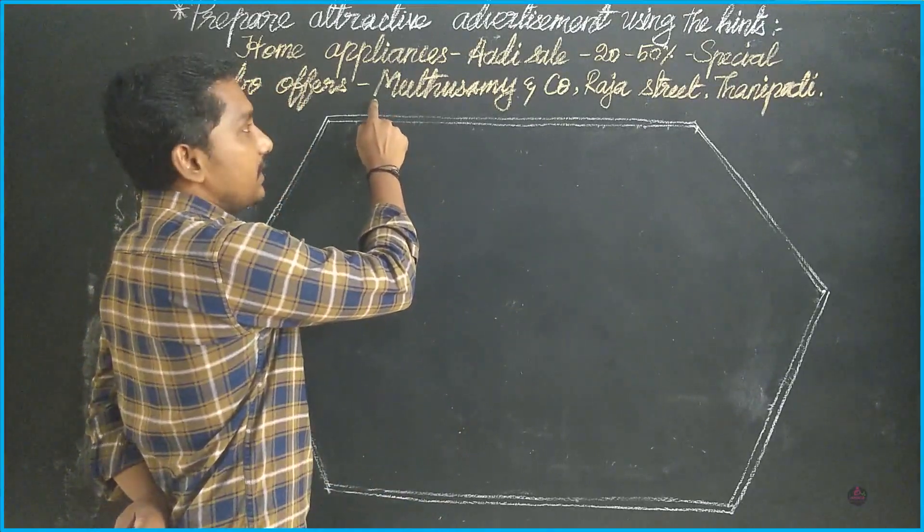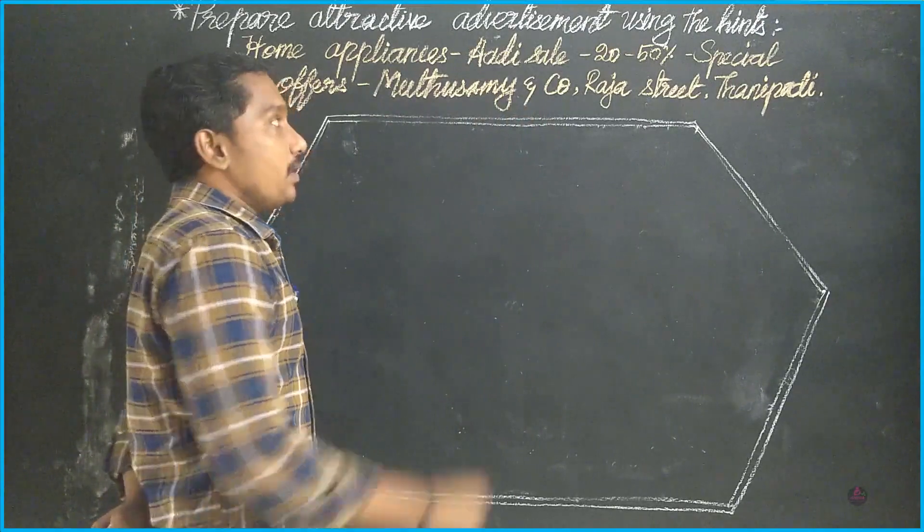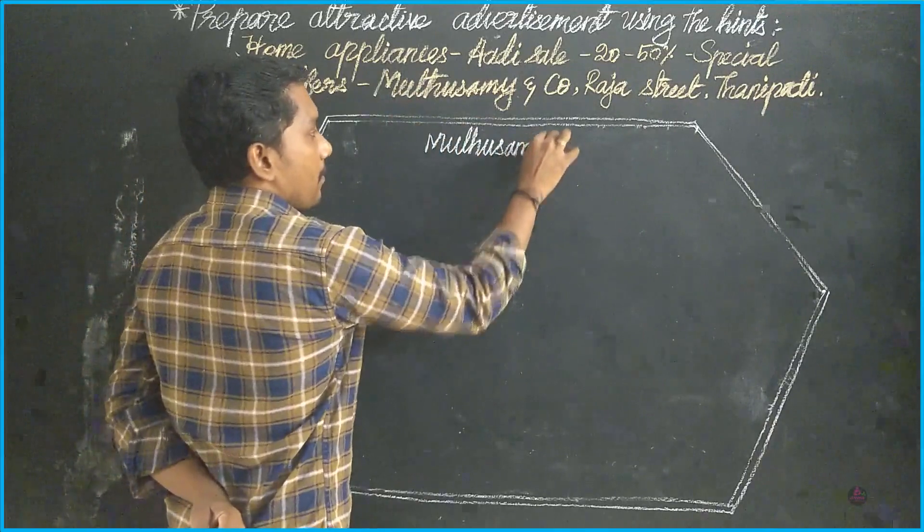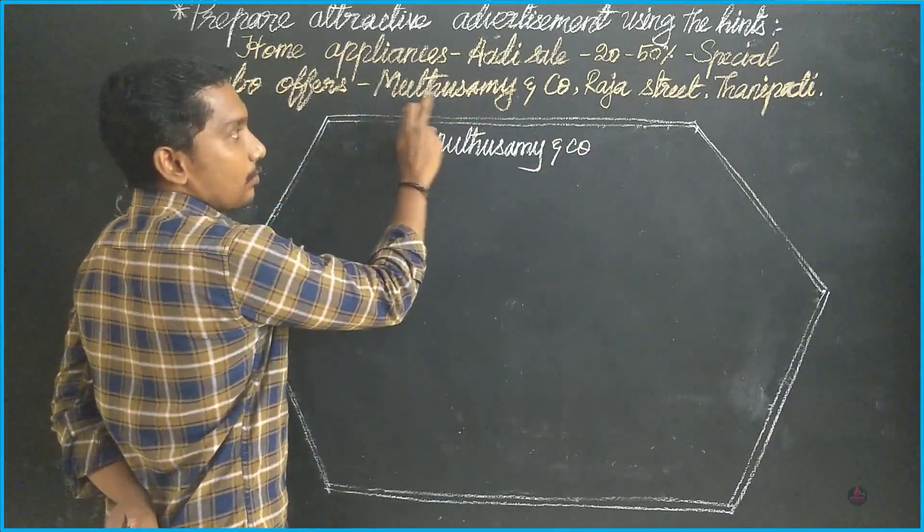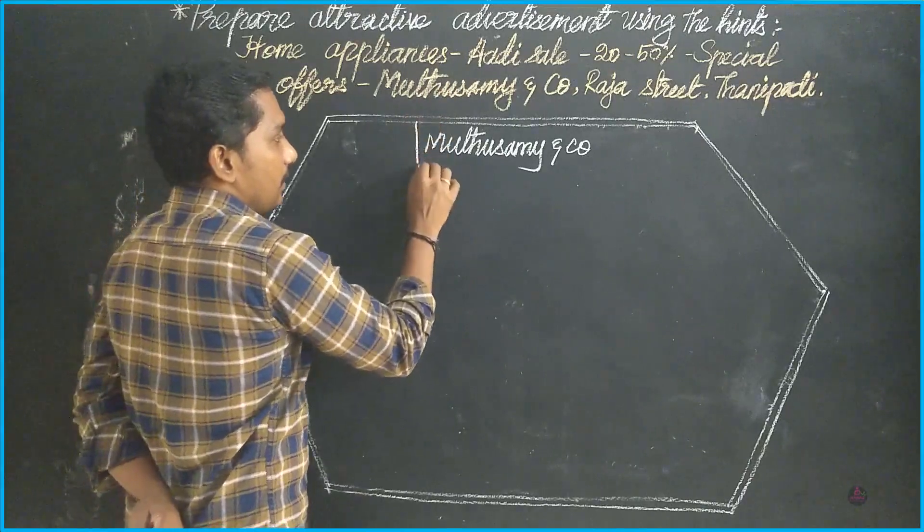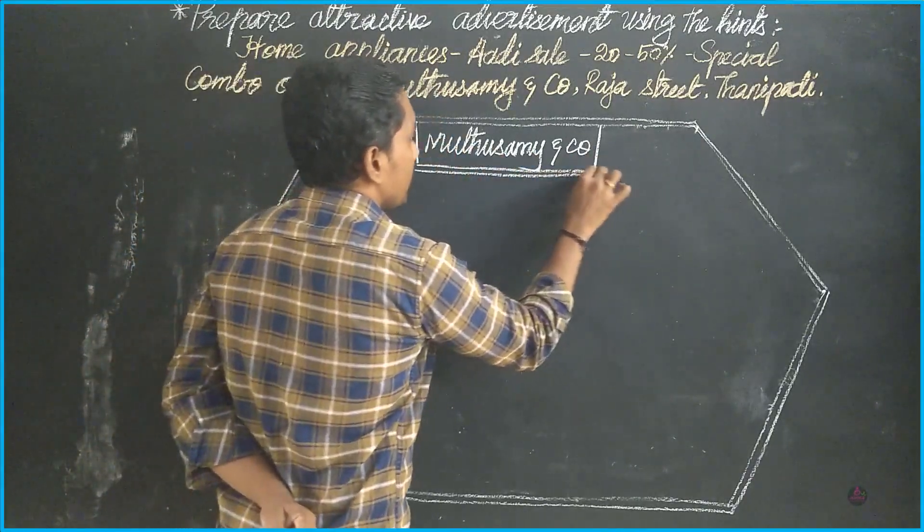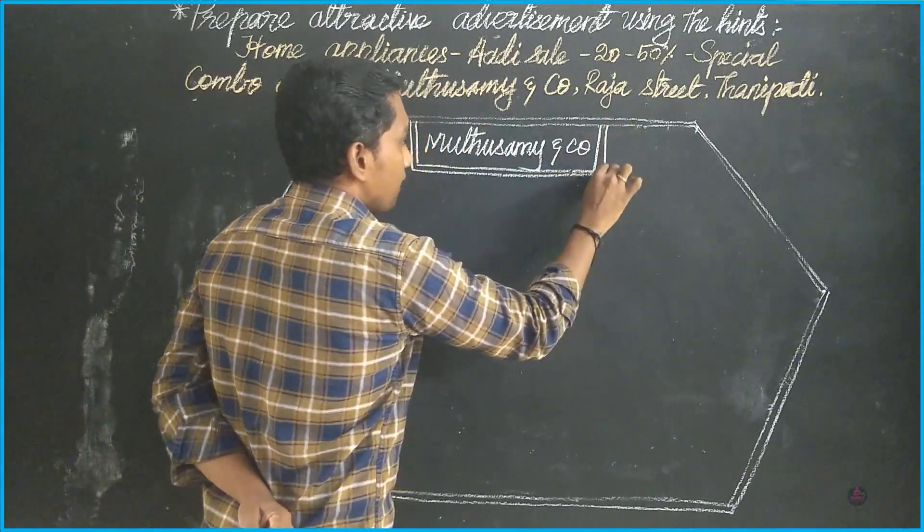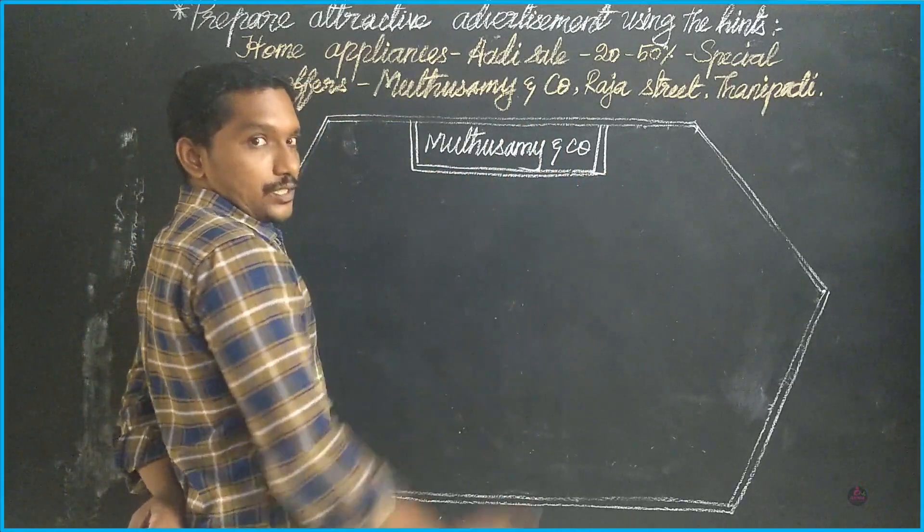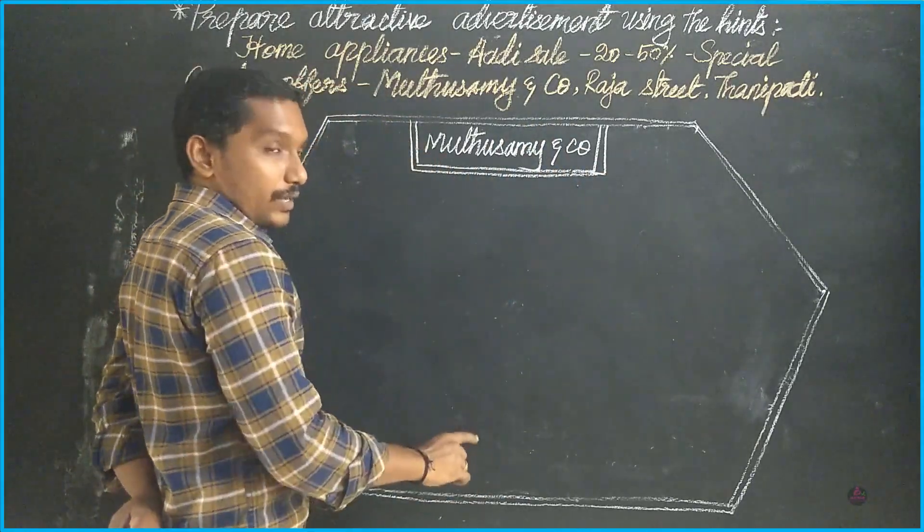I'll just find the title here. Muthuswamy & Co - this is the name of the shop, so I just write it here in the center of the place. The spellings are there. I just take it down here and draw a box for it. This box also in double line. Use pencil for drawing, use pen for text.